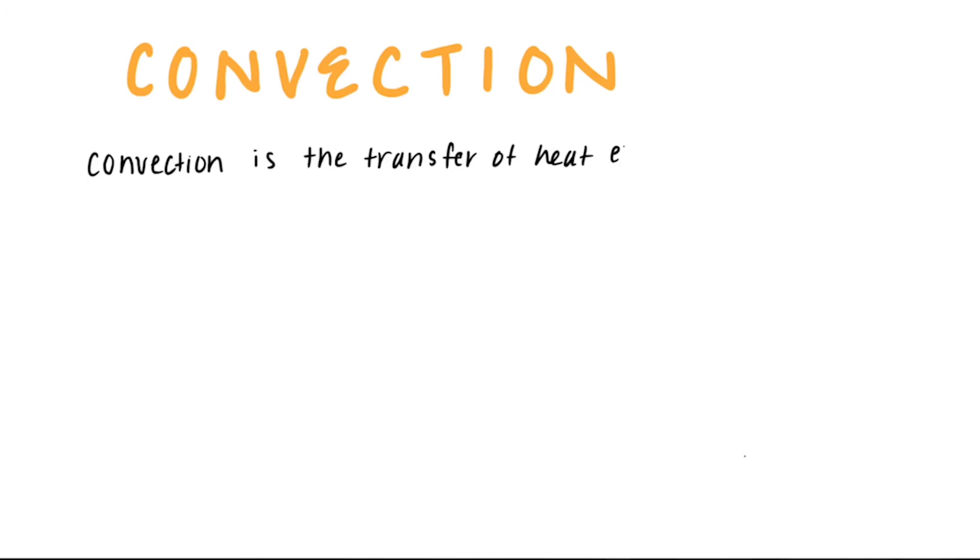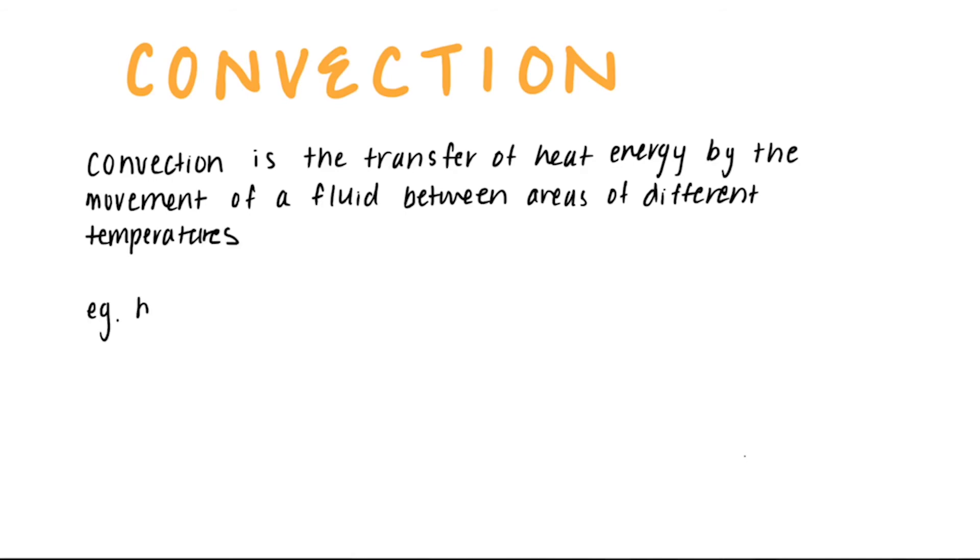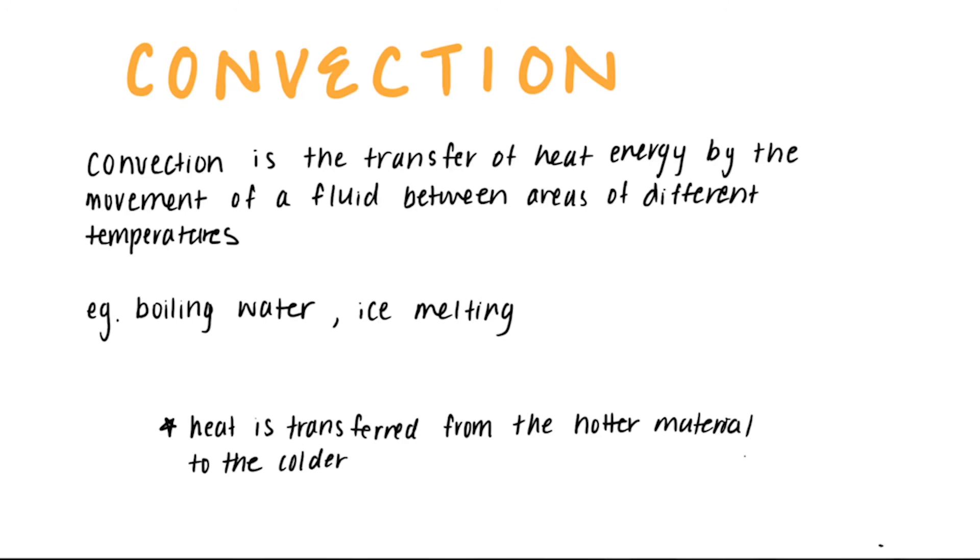Convection is the transfer of heat energy by the movement of a fluid between areas of different temperatures. For example, boiling water. When we boil water, the heat moves from the burner up into the water. Or when ice melts, the heat from the air moves into the ice. Remember that the heat is always transferred from the hotter material to the colder material.